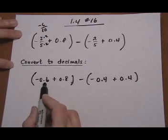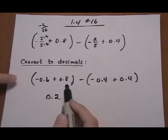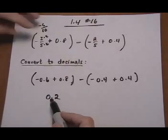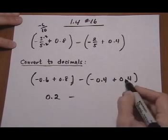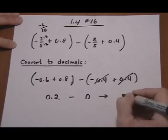All right, now we can go ahead and minus 0.6 plus 0.8 would give us 0.2, because we have different signs, so we keep the sign of the bigger number and find the difference of the numbers. And then minus negative 0.4 plus 0.4 goes to 0. So our answer would be 0.2.